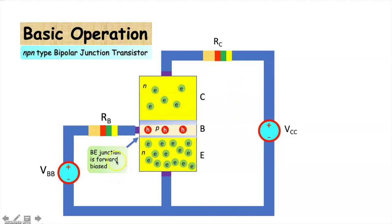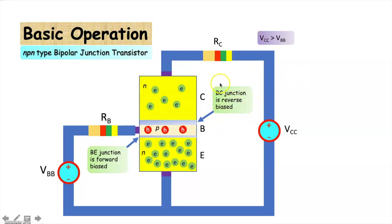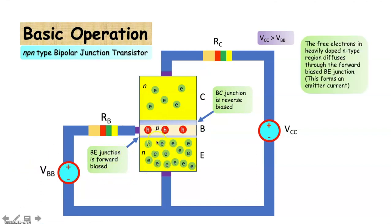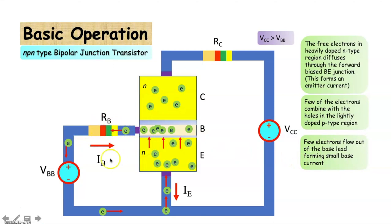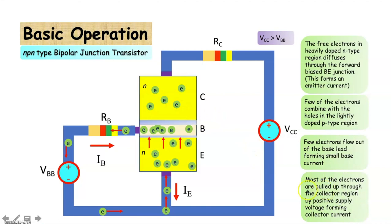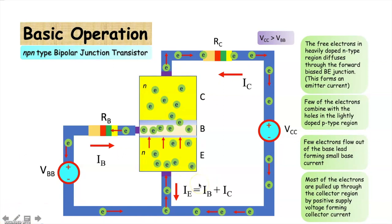The base-emitter junction is forward biased — the P layer is connected to the positive terminal and the N layer is connected to the negative terminal. Whereas the base-collector junction is reverse biased. The collector potential is more positive than the base potential, so the base-collector junction is reverse biased. As the BE junction is forward biased, the free electrons in the emitter layer diffuse to the base layer, contributing to the emitter current. A few of the electrons combine with the holes in the base layer. A few electrons exit through the base lead, contributing a small base current. Most of the electrons are pulled through the collector layer by the positive supply voltage, contributing the collector current. The emitter current is equal to the sum of the base current and the collector current.